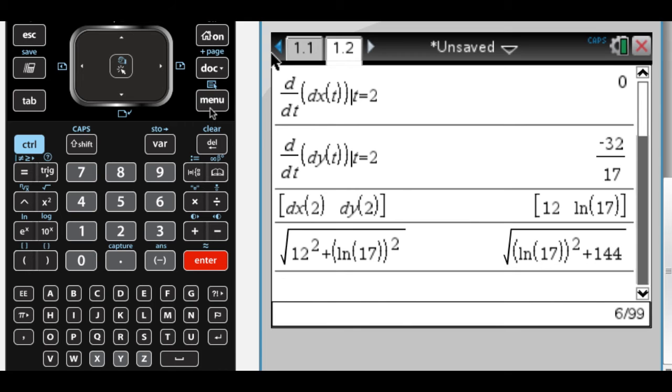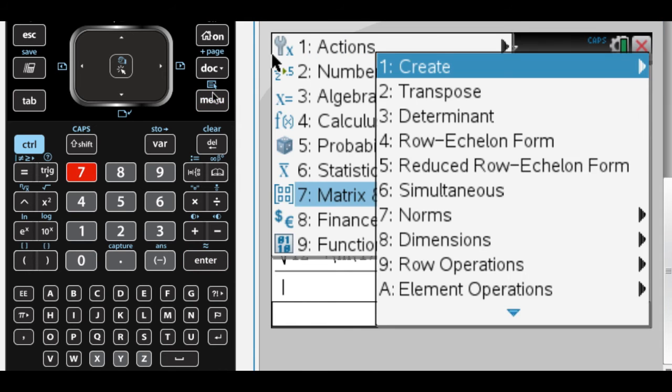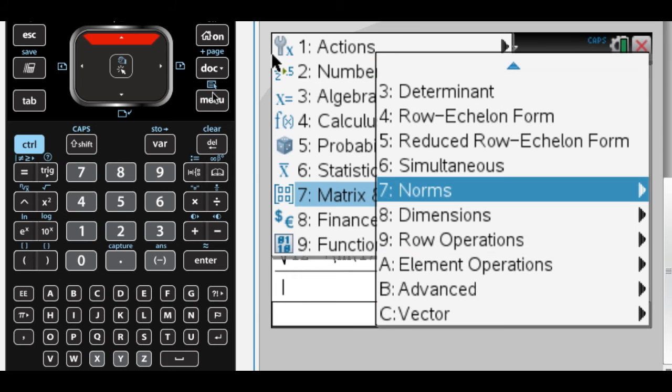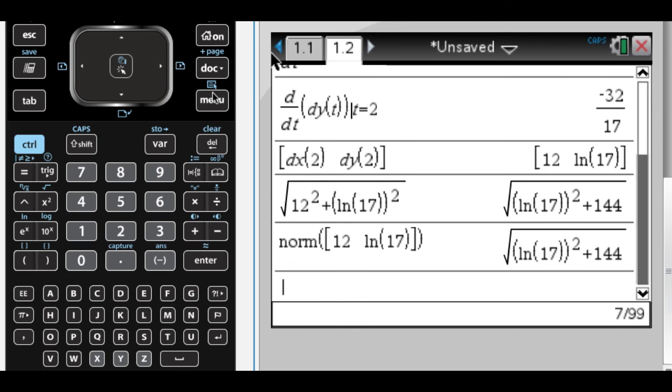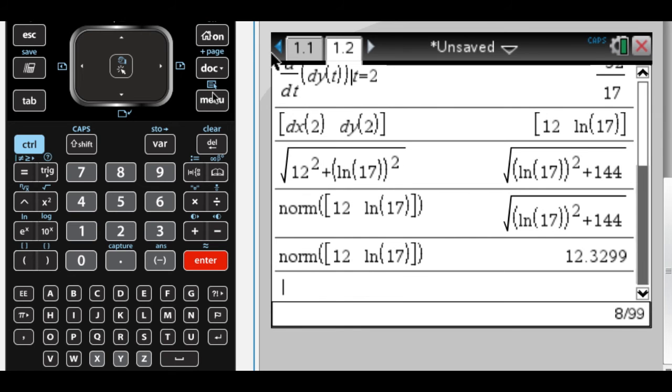Or I can use the built-in thing here, menu 77 for norm of this. Either way, a decimal approximation is 12.330. So that's part A.